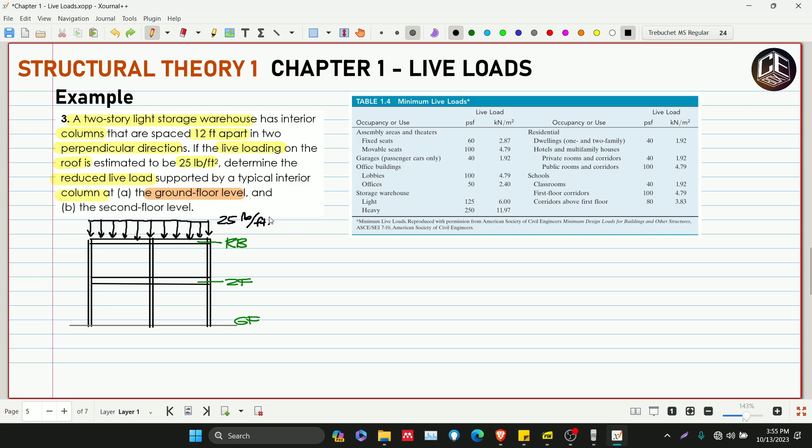Okay, so ito ay 25 pounds per feet squared. Yung ating building is pinapagamit for light storage warehouse. Kunin natin yung ating L-not. L-not is equivalent to sa light weight 125 pounds per feet squared.